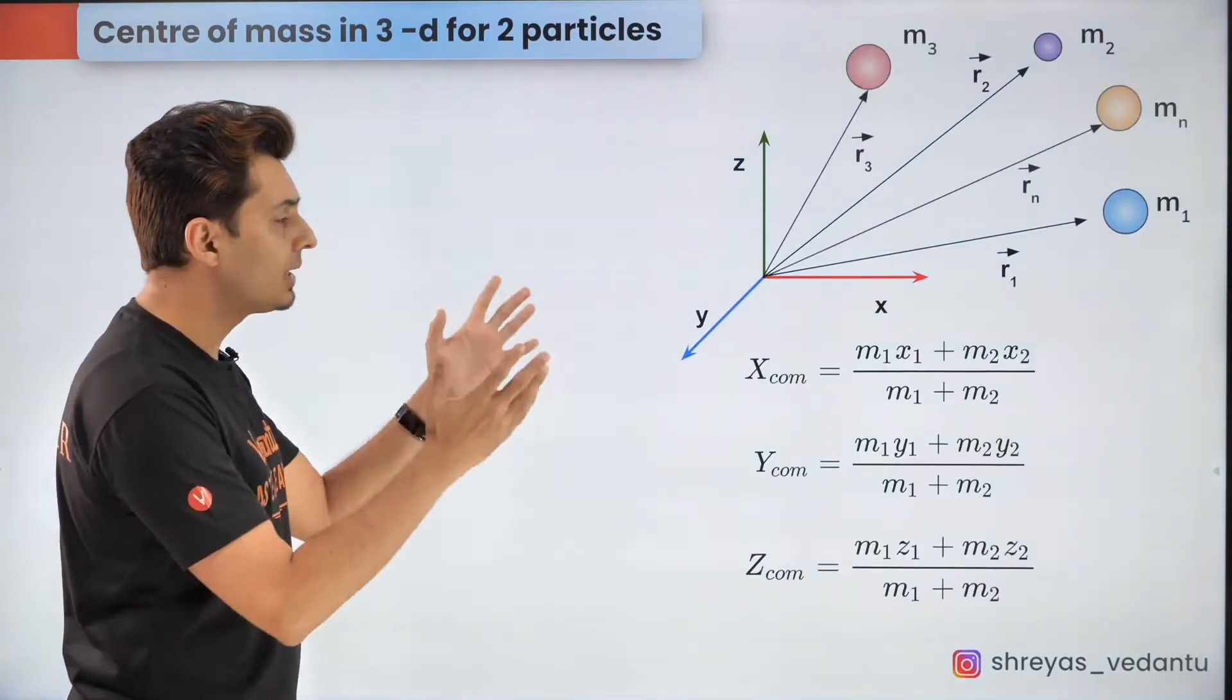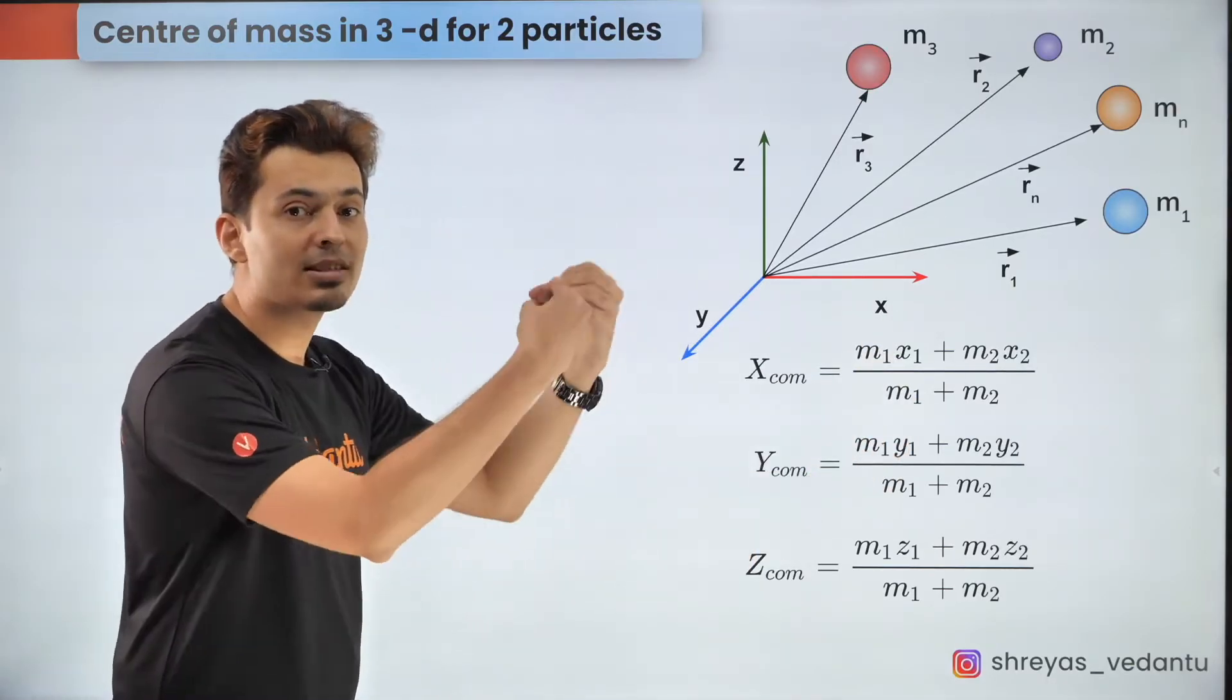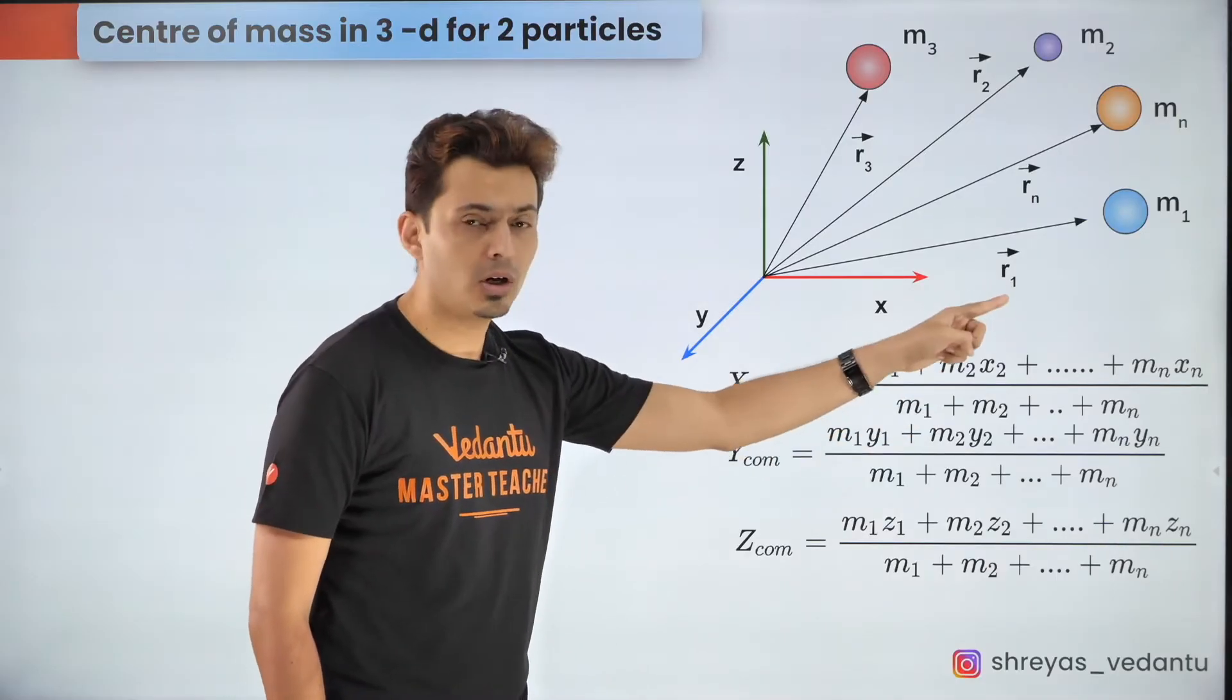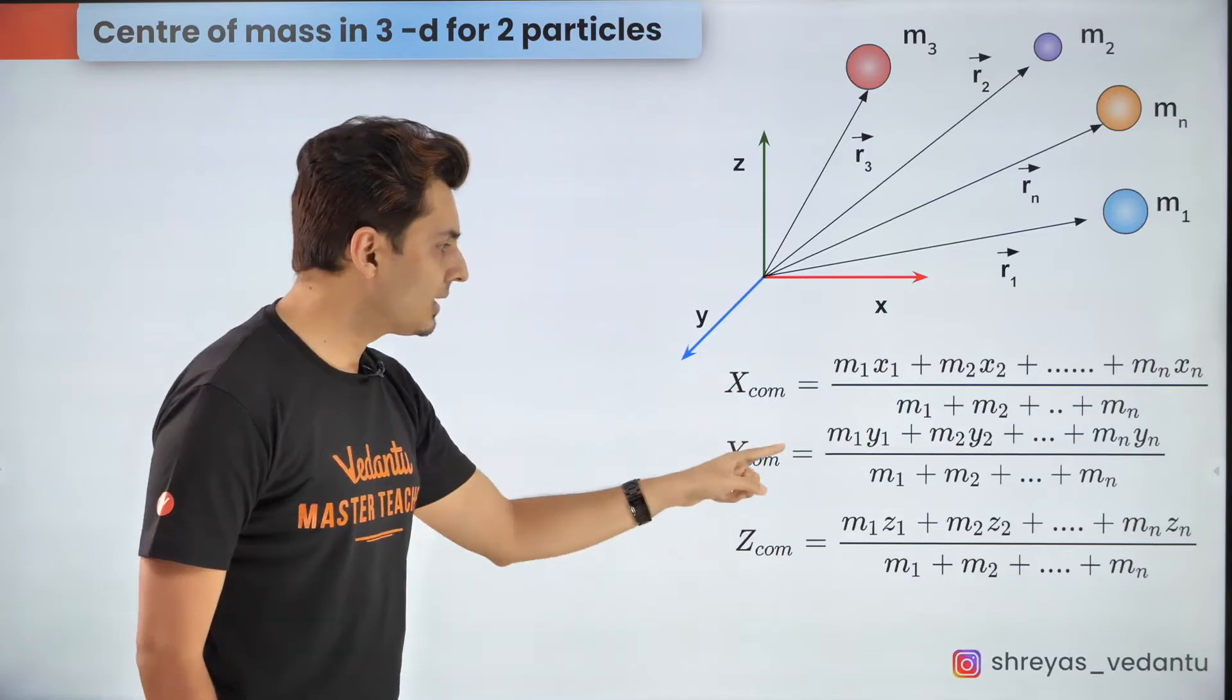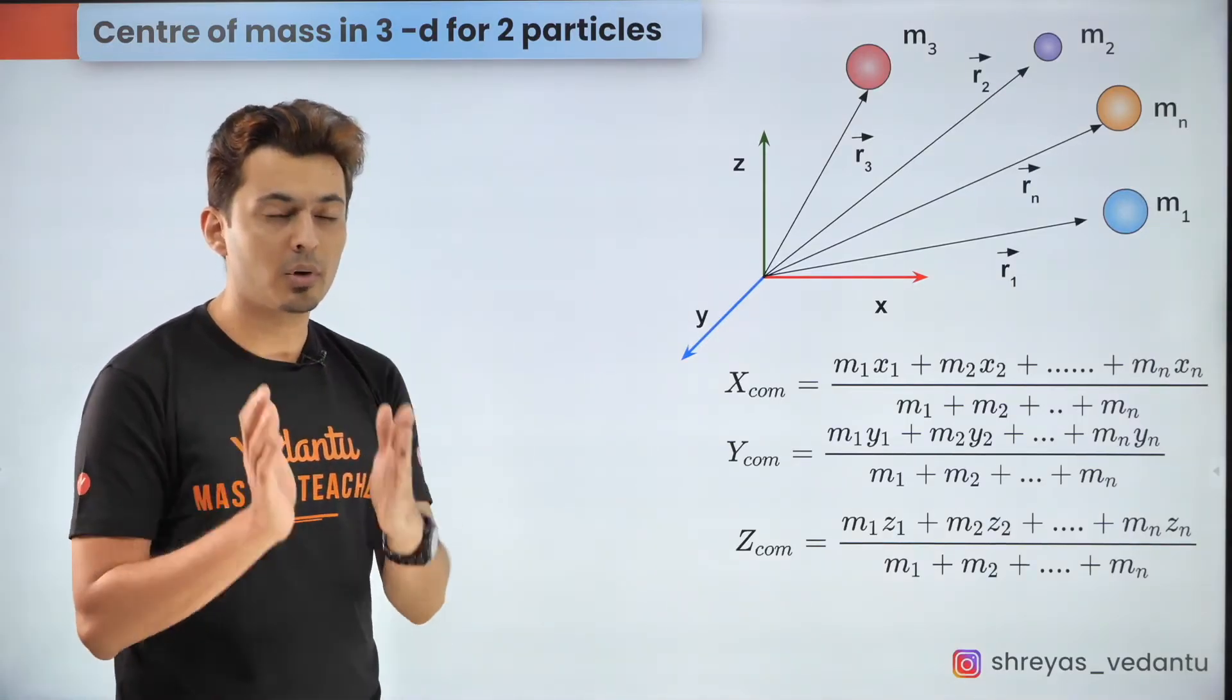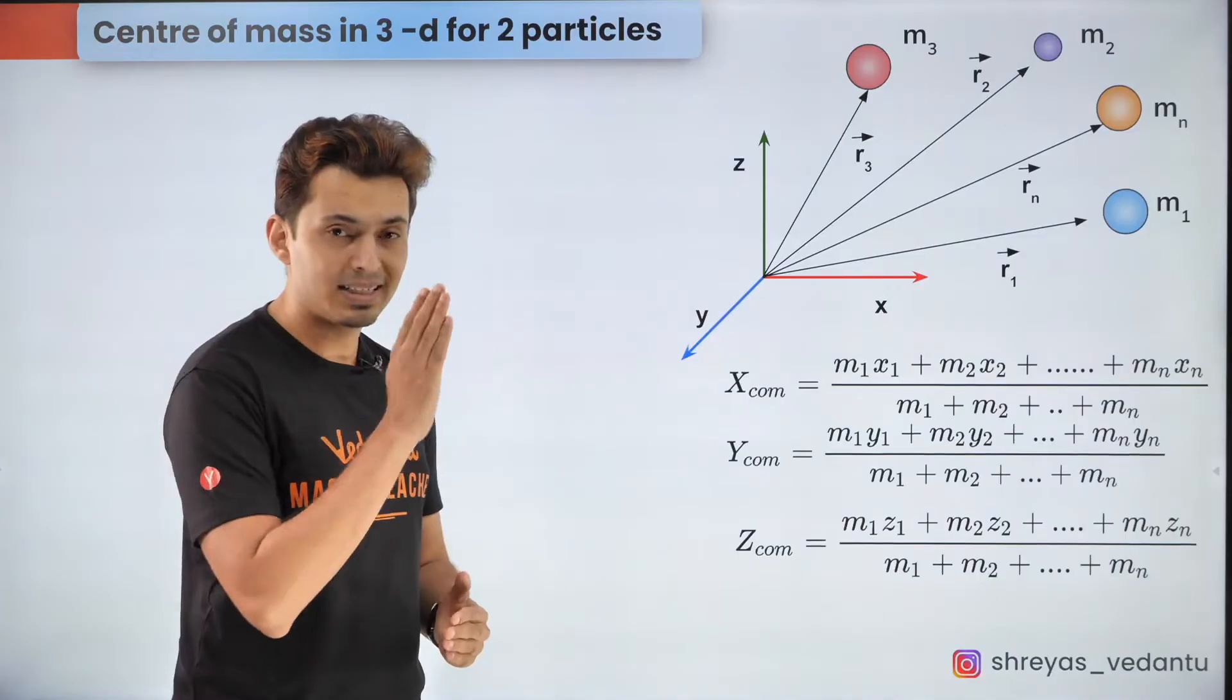Now if you have more than two masses then these formulas will change a little bit. The terms in the numerator and denominator will have some more entities. You will have x coordinate given by m1 x1 plus m2 x2 plus dot dot dot till the last product of mass and the coordinate. Notice for every coordinate of the center of mass the denominator always contains the total mass and the numerator is always a product of mass and the respective coordinate along that axis. Now these formulas are to be used for discrete systems.